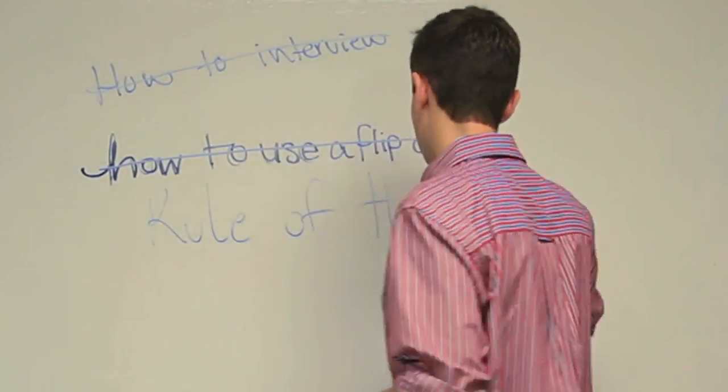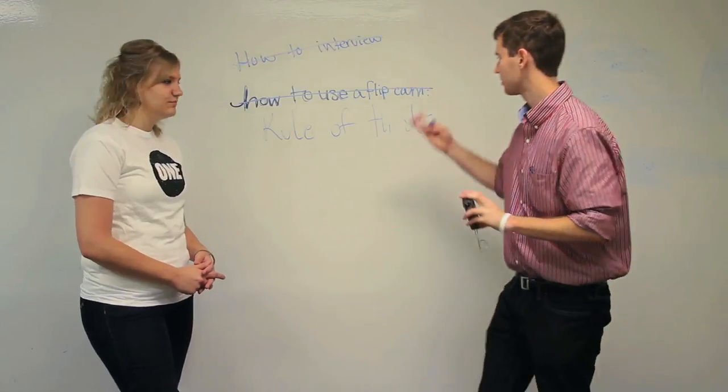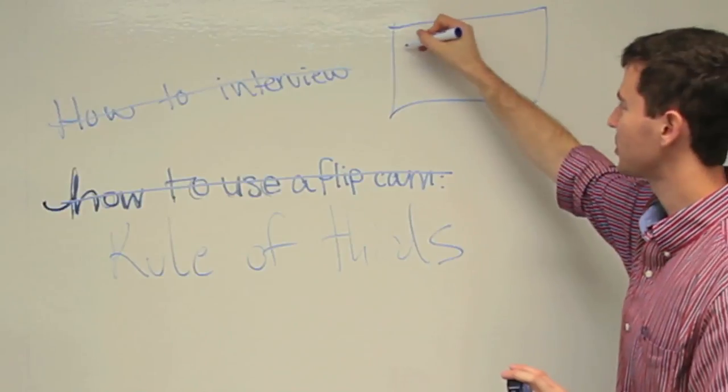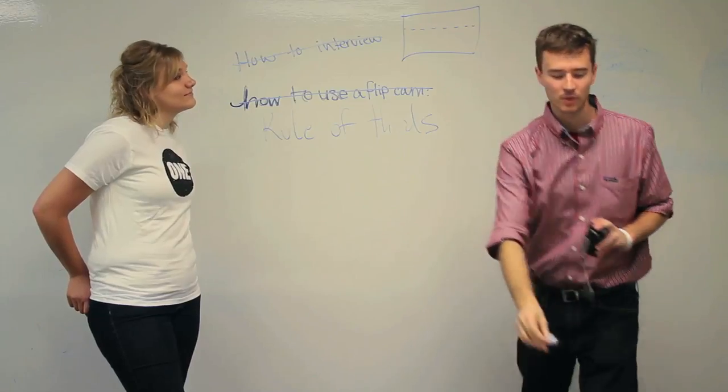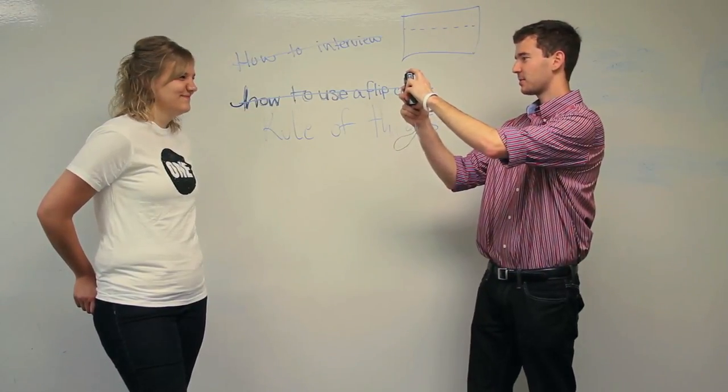So when you're framing your shot with the flipcam, you've got a screen that looks roughly like a square here. And you want the person's eyes to be about two-thirds of the way up the screen. So when I'm framing this shot here with Grace, that's what we're going for.